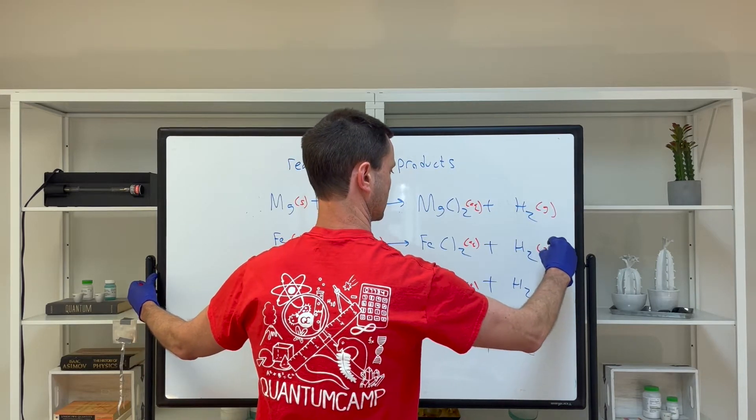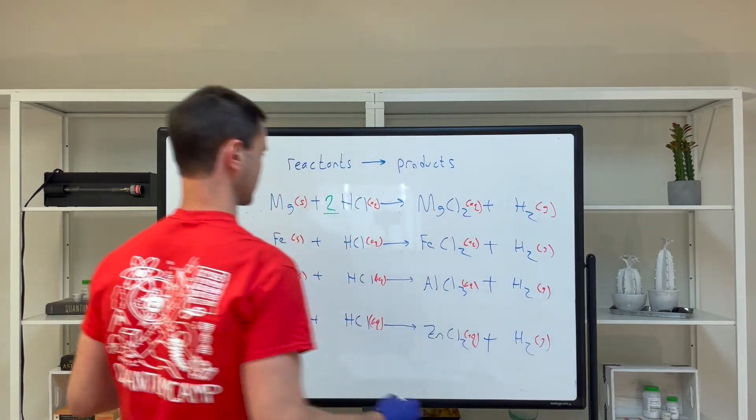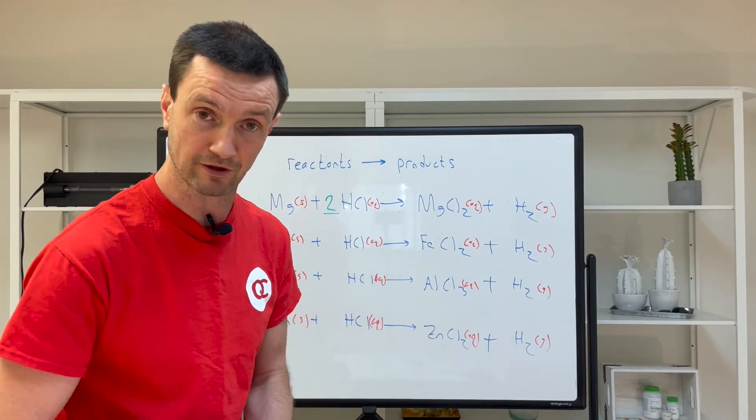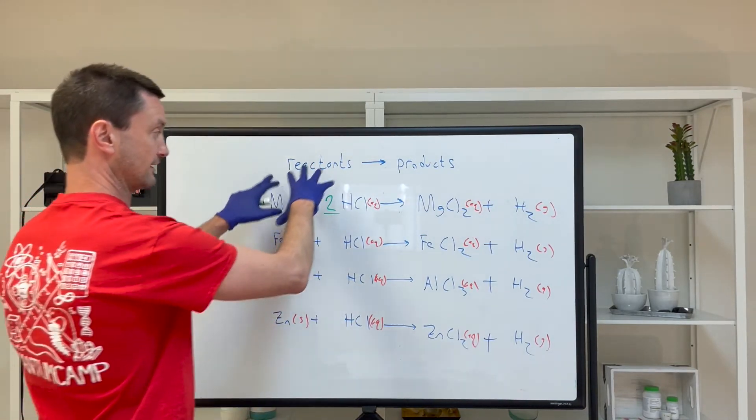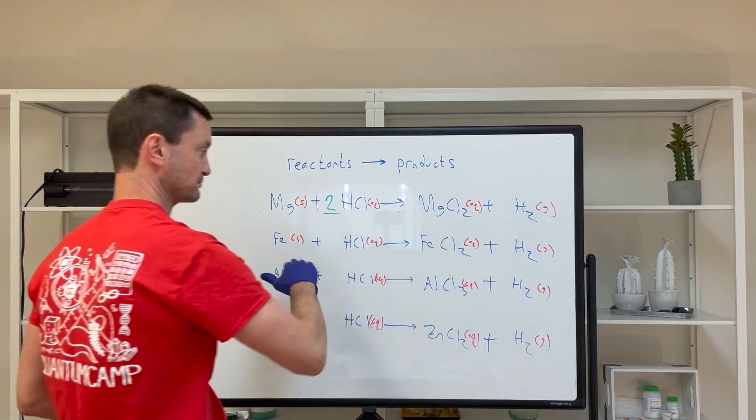H2 is a gas, so it gets a G. The last thing we have to do is balance the reaction because we have to adhere to the law of conservation of mass. The amount of atoms on this side have to equal the amount of atoms on this side. Let's balance each reaction.